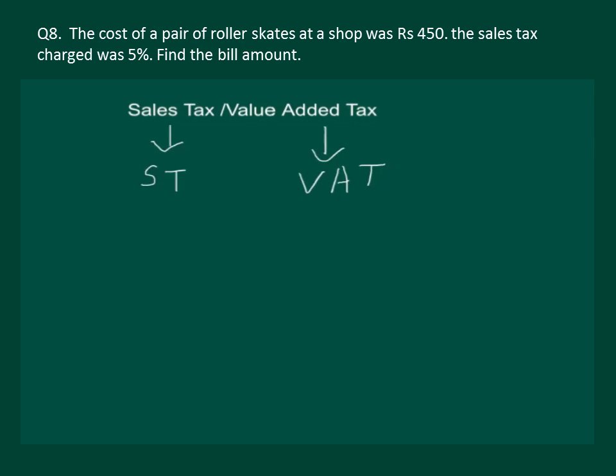The sales tax is charged by the government on the sale of an item. It is collected by the shopkeeper from the customer and given to the government. It is therefore always on the selling price of an item and it is added to the value of the bill.